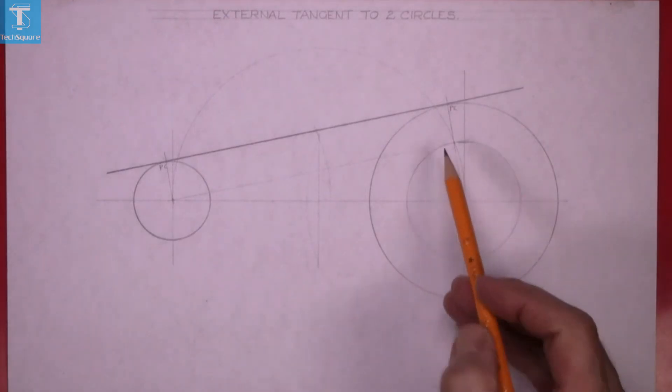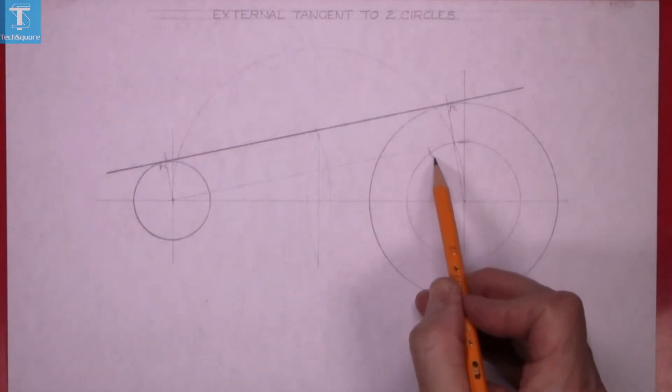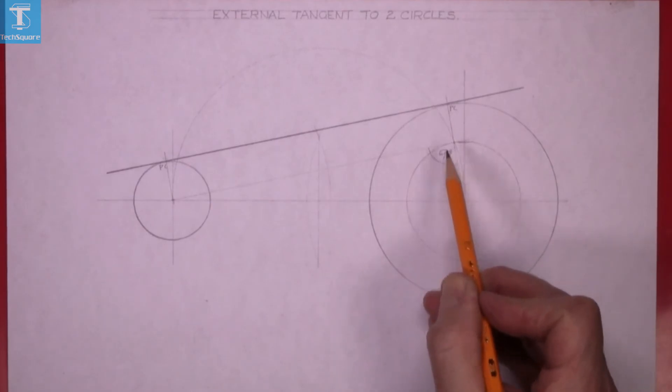This here is 90 degrees. That's the angle in a semicircle.